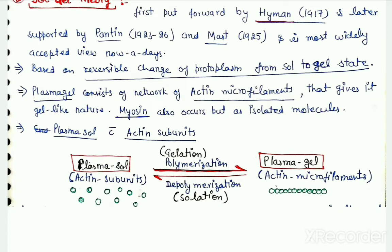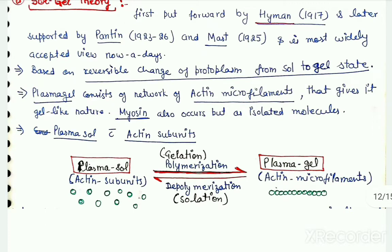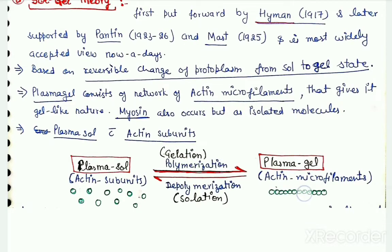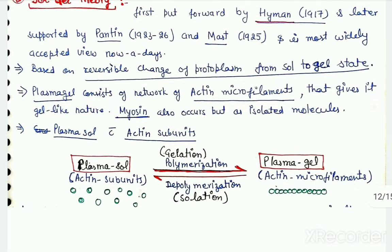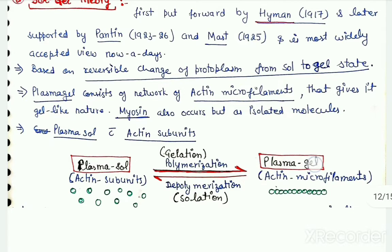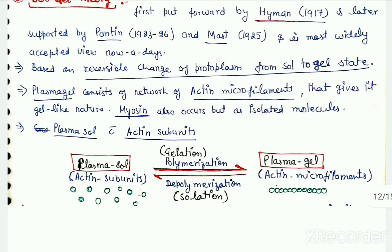When these actin subunits polymerize and form chains in the form of microfilaments, the cytoplasm gets a comparatively gelatinous state which we call plasma gel. So this means plasma sol can convert into plasma gel and vice versa.